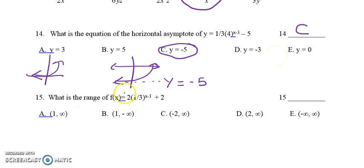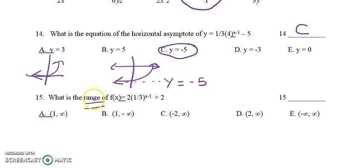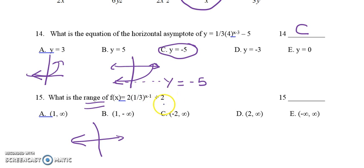Number 15 deals with another exponential function. The 2 in front gives a vertical stretch by 2. The base 1 third with a negative exponent makes this a decreasing function — exponential decay. The exponent x minus 1 shifts the graph 1 unit to the right, and plus 2 shifts the graph 2 units up. We are trying to find the range. Focusing on vertical shifts, the graph shifts 2 units up, so the asymptote is at y equals 2.